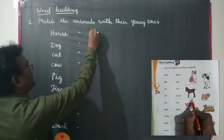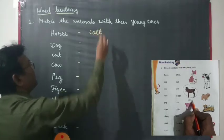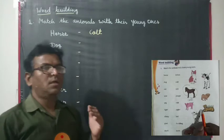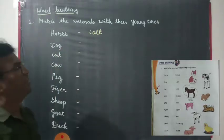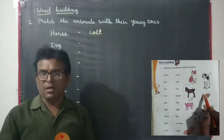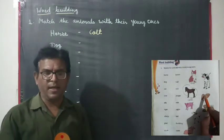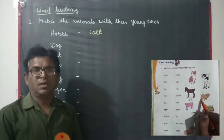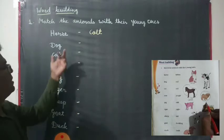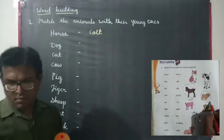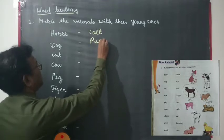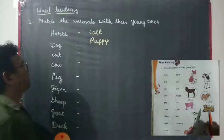The spelling is C-O-L-T. Yes, my dear, the young word of horse is called a colt. Second, what is called the young word of dog? We find out the young word of dog from the pictures given in our textbook. Yes, the young one of dog is called puppy.